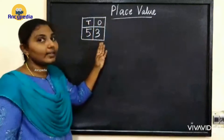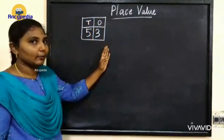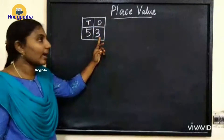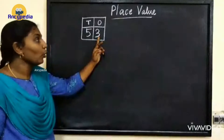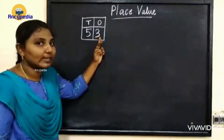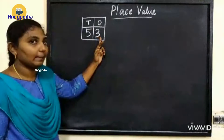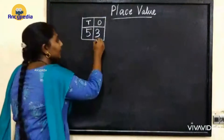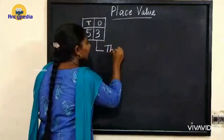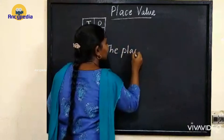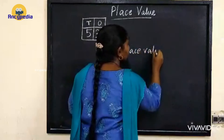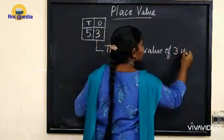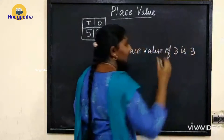Okay now we are going to write the place value. What is the number in 1's place? We have 3. So the place value of 3 is 3 because it is in 1's place.